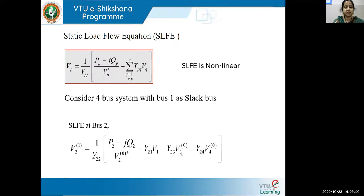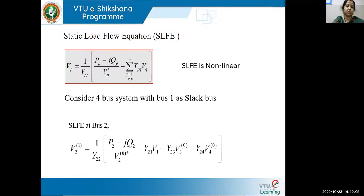The initial voltages at all PQ buses will be assumed close to the actual value. Usually we assume these voltages as 1 + j0, which we call the flat voltage profile. To repeat: all initial values of PQ bus voltages are considered as 1 + j0, which is called the flat voltage profile.